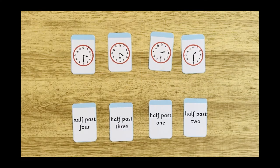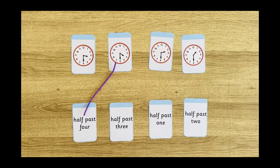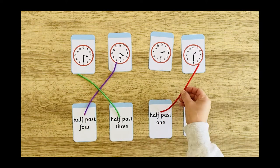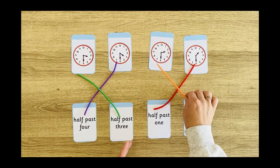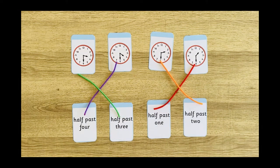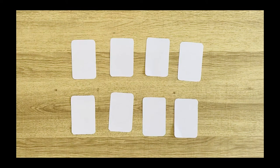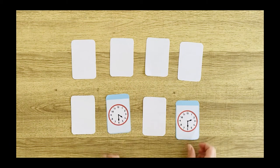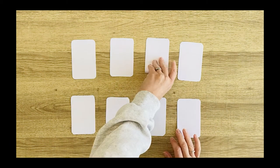With these half-past matching flashcards you could lay them out and use pipe cleaners to join up the matching pairs. You could also use the same cards, place them face down on a table, and play matching pairs.